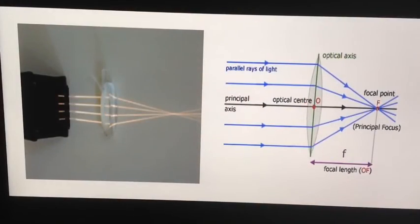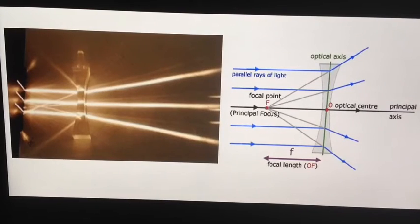Some lenses bring the light together. They converge the light. This is a convex lens bringing the light together to a focal point. Other lenses, cut differently, are concave lenses. And these lenses spread the light out. We call that diverging the light.